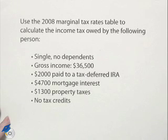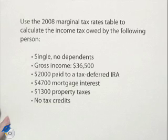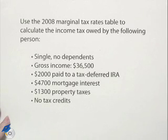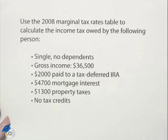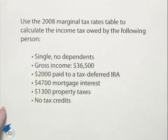Single, no dependents. Gross income: $36,500. $2,000 paid to a tax-deferred IRA. $4,700 mortgage interest. $1,300 property taxes. No tax credits.